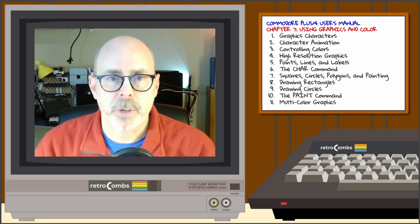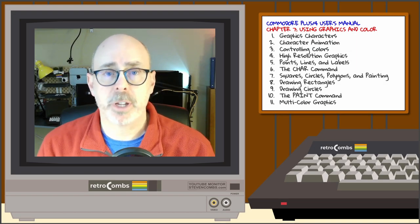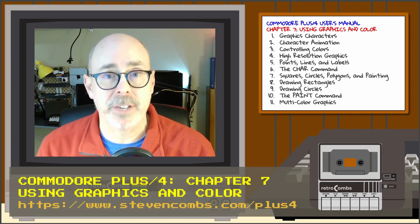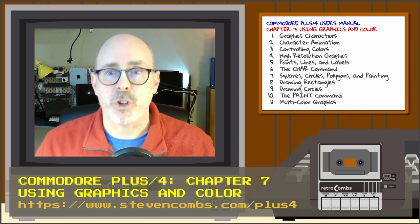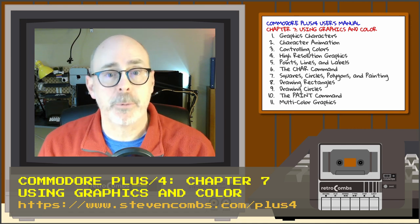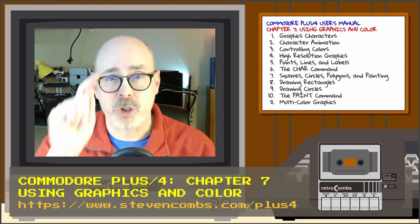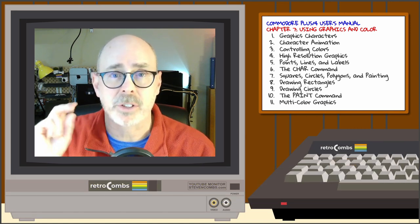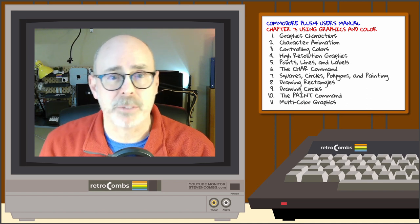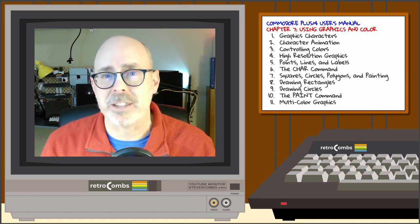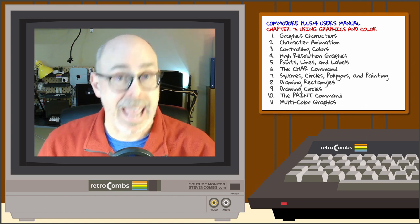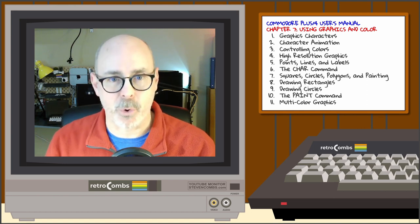In this episode of Retro Combs, I'm returning to the Commodore Plus/4 User's Manual for Chapter 7: Using Graphics and Color. If you're eager to create images on your Commodore Plus/4, this is the chapter for you. It includes information on PETSCII characters, colors, graphics commands, different graphics modes, and ways to create static images as well as animations.